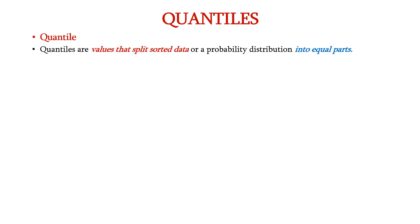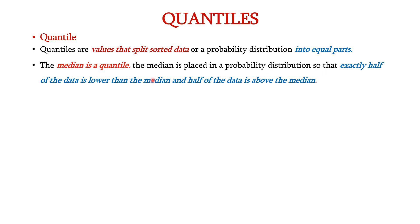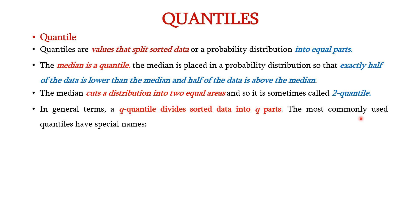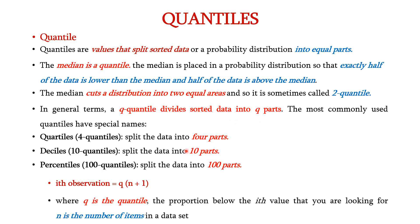Finally let us see about quantiles. Quantiles are values that split sorted data or a probability distribution into equal parts. The median is a quantile — it is placed in a probability distribution so that exactly half of the data is lower than the median and half is above. The median cuts a distribution into 2 equal areas and so is sometimes called a 2-quantile. In general, a q-quantile divides sorted data into q parts. The most commonly used quantiles are quartiles (4 quantiles, splits data into 4 parts), deciles (10 quantiles, splits into 10 parts), and percentiles (100 quantiles, splits into 100 parts). We can represent the ith observation as q into n plus 1, where q is the quantile proportion below the ith value and n is the number of items in the data set.